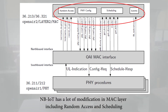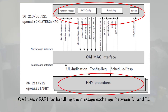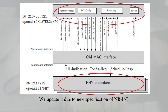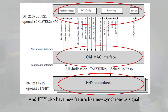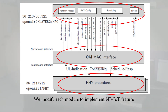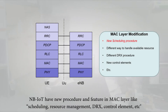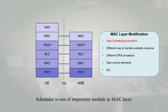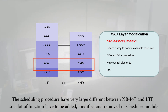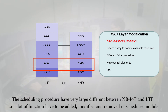NB-IoT has many modifications in the MAC layer, including random access and scheduling. OAI uses NB-IoT FAPI for handling message exchange between layer 1 and layer 2, which we updated due to new NB-IoT specifications. The physical layer also has new features like new synchronization signals. NB-IoT introduces new procedures and features in the MAC layer such as scheduling, resource management, and TRX control. The scheduling procedure differs greatly from LTE, so many functions had to be added, modified, or removed in the scheduler module.